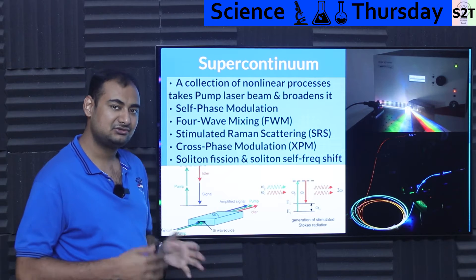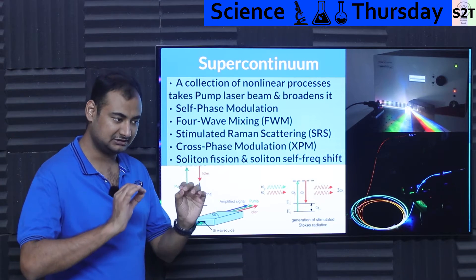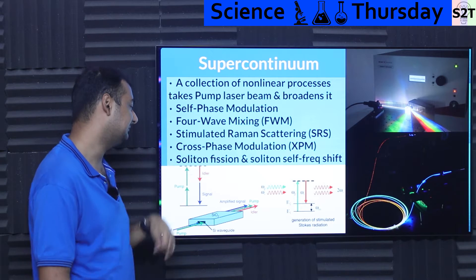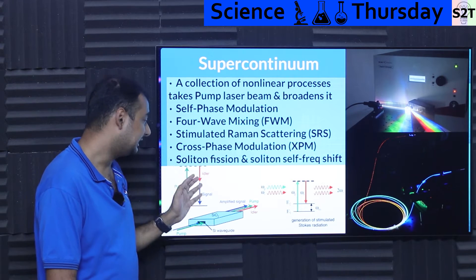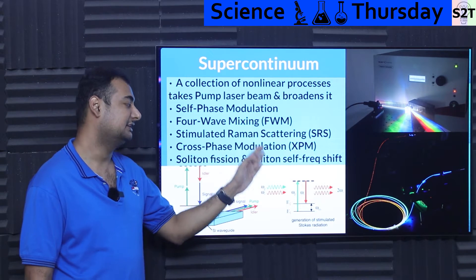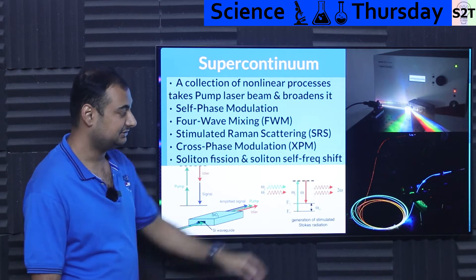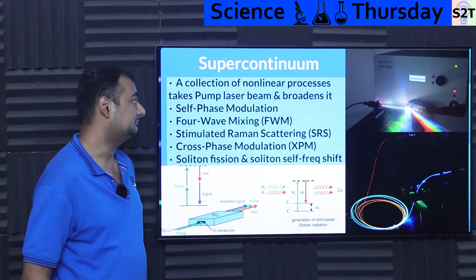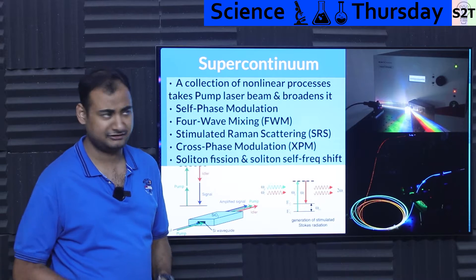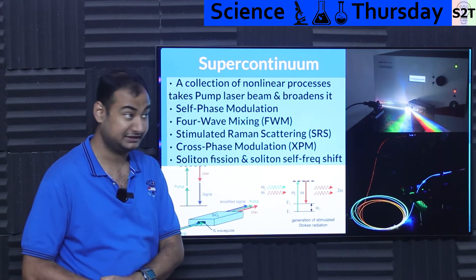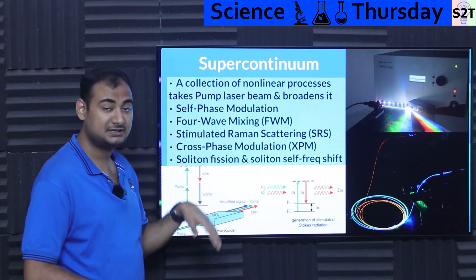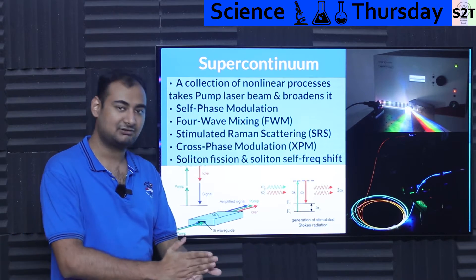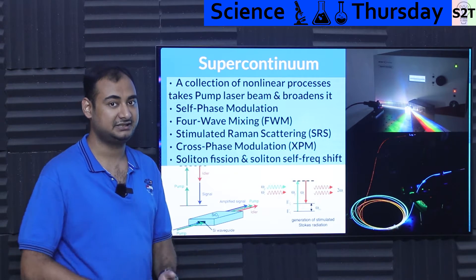So many things are happening simultaneously. That's why it's classified as a collection of nonlinear processes. We can control it to some extent, but we do not have full fine-tuned control over it. There's also soliton fission and soliton self-frequency shift. Basically, you put monochromatic light in and broadening will happen. It's a really complex system — fundamentally and genuinely complex. And it's very recent, so all these aspects are not yet fully defined.